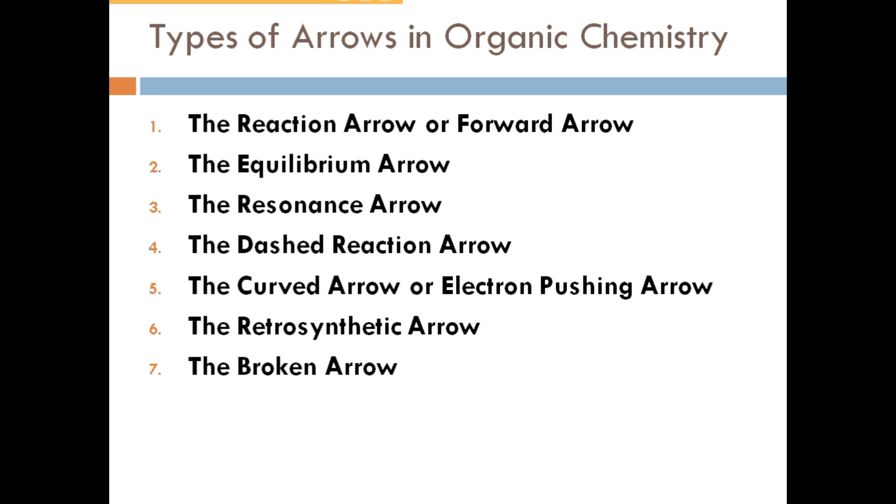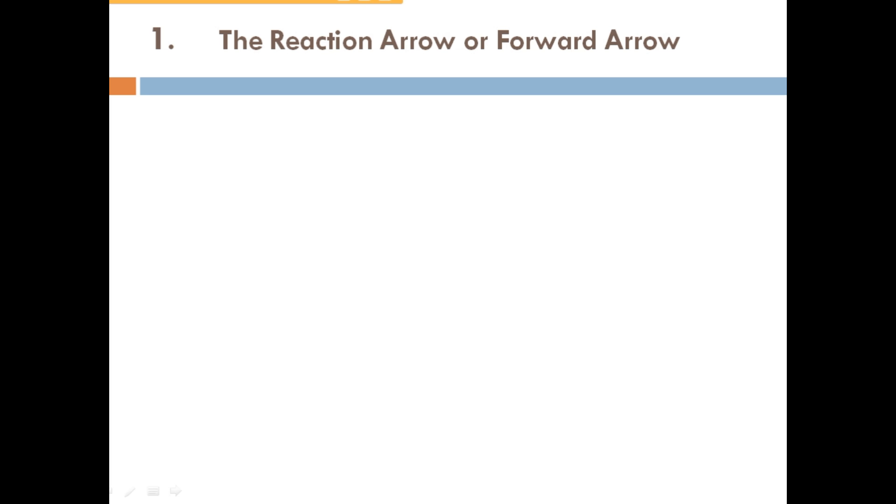Let's see the explanation of these arrows. First one is the reaction arrow or forward arrow. You are seeing this is a reactant which is converted into the product.